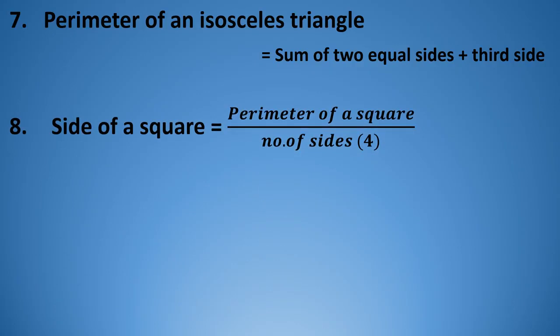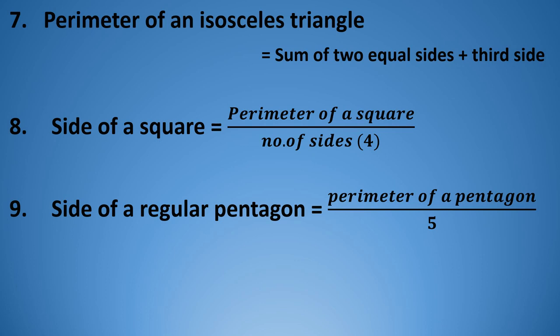Eighth, side of a square equals perimeter of a square divided by number of sides. In a square we have 4 sides, so it is perimeter divided by 4. Side of a regular pentagon is perimeter of the pentagon divided by 5, because a pentagon has 5 sides. Similarly, side of a regular hexagon is perimeter of the hexagon divided by 6, because a hexagon has 6 sides.